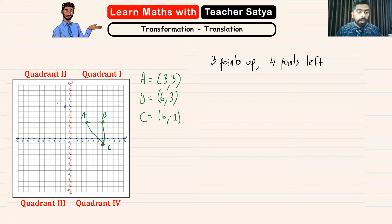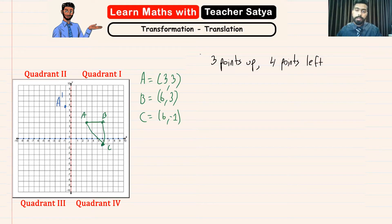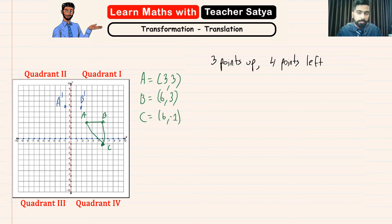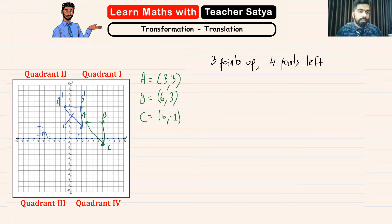Keep in mind we will not name it as A, but as A prime — the original letter with a slash on top. Now we do the same for B and C. Everything goes 3 up and then 4 left to find B prime. Similarly, C prime is found by going 3 up and 4 left. If we join the dots, this will be our image.